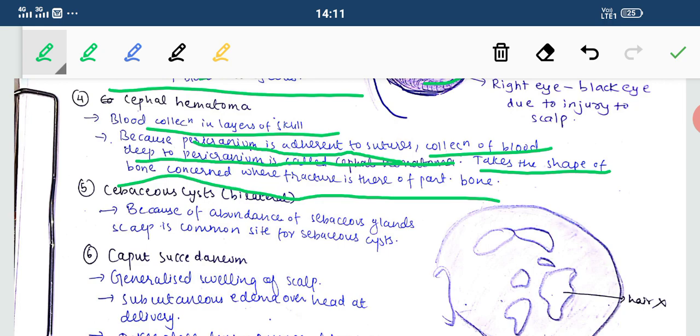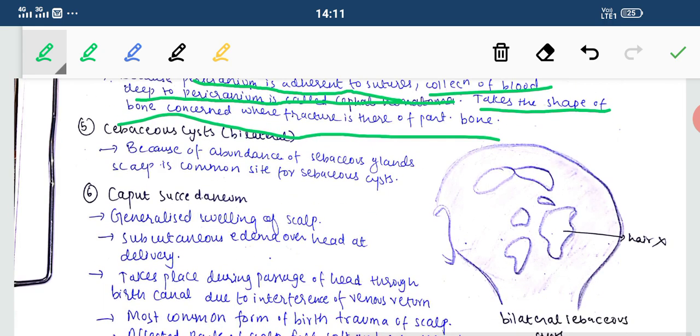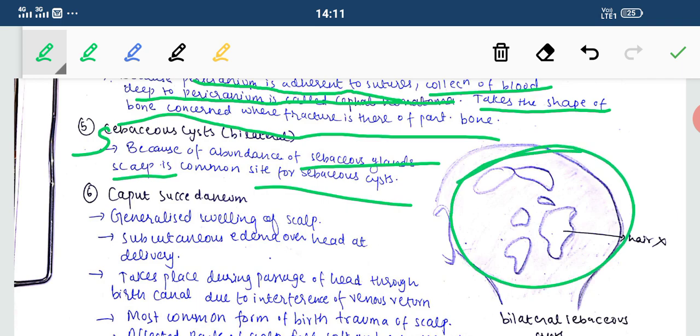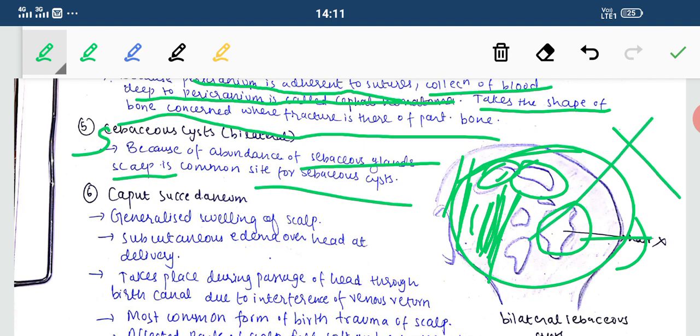Now there's sebaceous cysts. This is the cyst, the sebaceous cyst, that is the site for sebaceous cysts that are forming in the scalp. That is the common site for sebaceous cysts. The diagram shows hairs and cysts forming in the scalp, known as sebaceous cysts or bilateral sebaceous cysts.